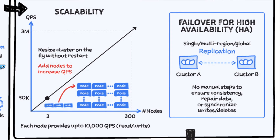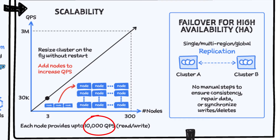How does it offer scale and high availability? Bigtable delivers highly predictable performance that is linearly scalable, and the throughput can be adjusted by adding and removing nodes. Each node provides up to 10,000 queries per second for reads and writes, and you can use Bigtable as the storage engine for large-scale low-latency applications, as well as throughput-intensive data processing and analysis.